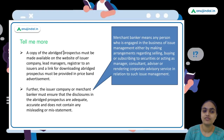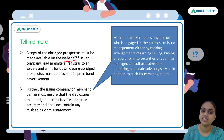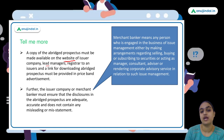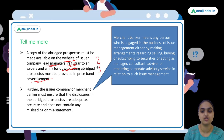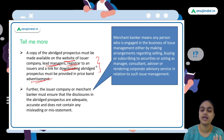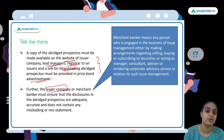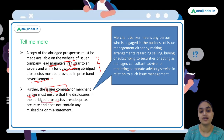A copy of the abridged prospectus must be available on the website of the issuer and on the website of the lead managers handling the issue. A download link must also be shared in the price band advertisement. The issuer company and the merchant banker must ensure that the abridged prospectus contains adequate and accurate information.